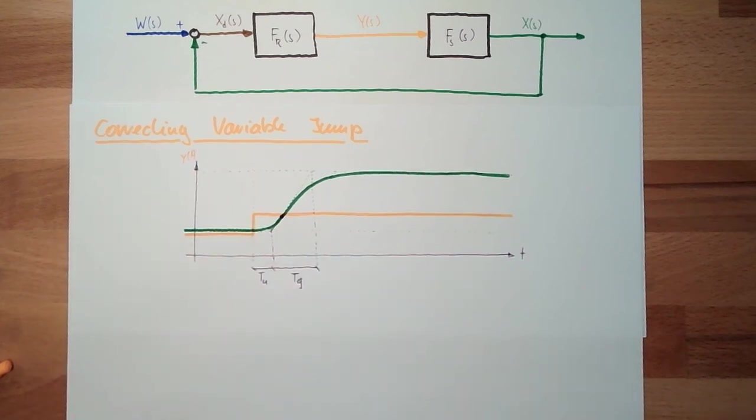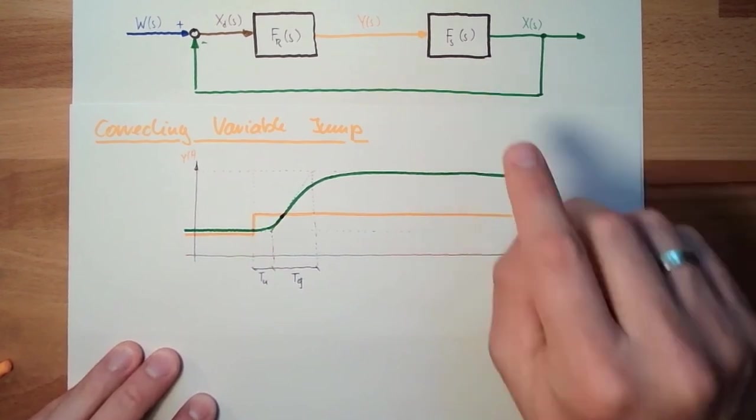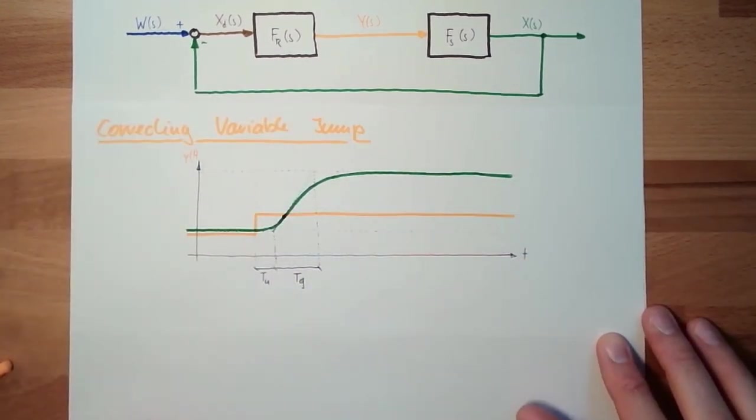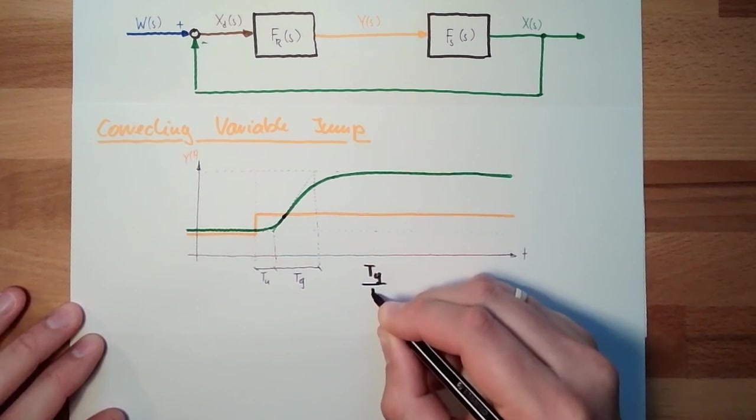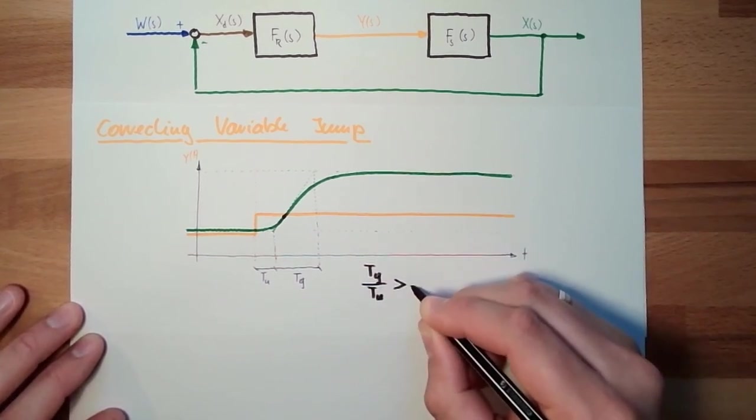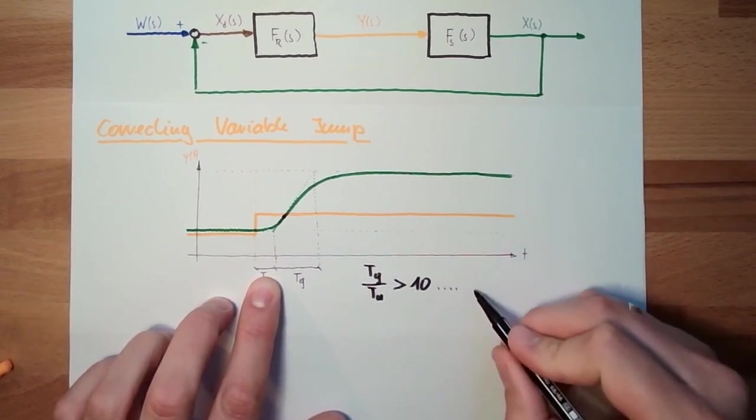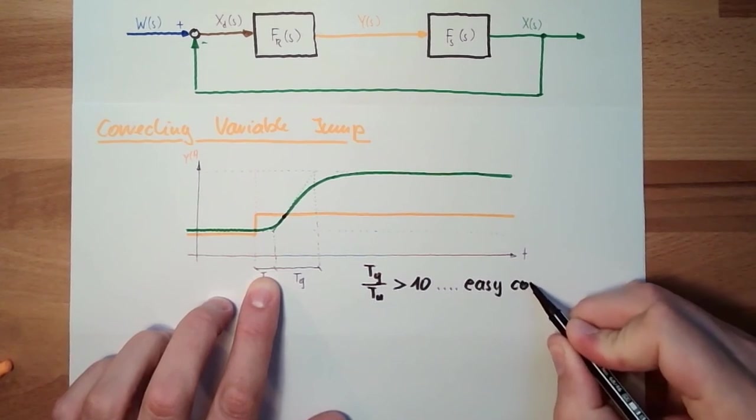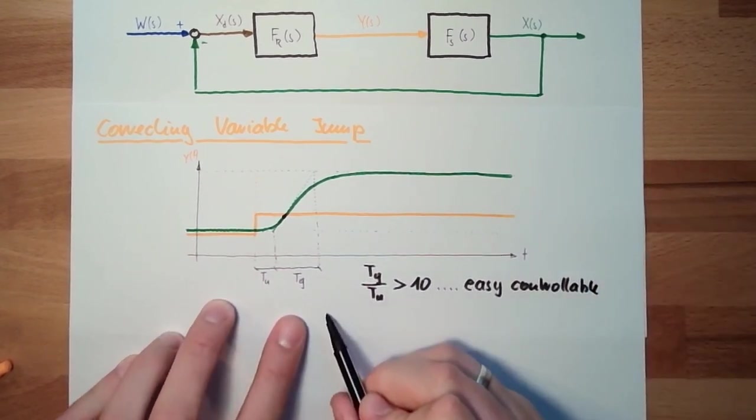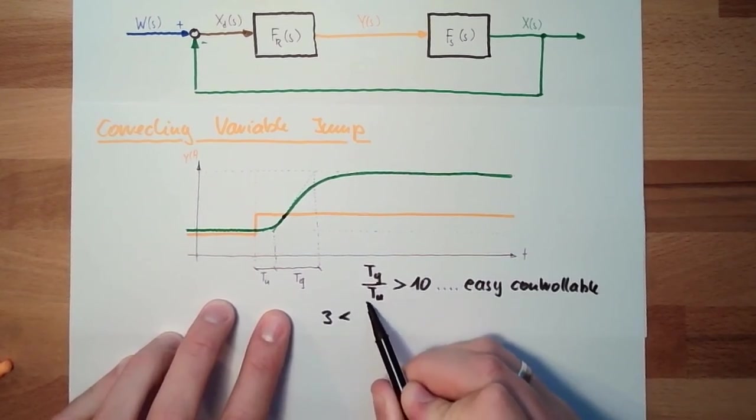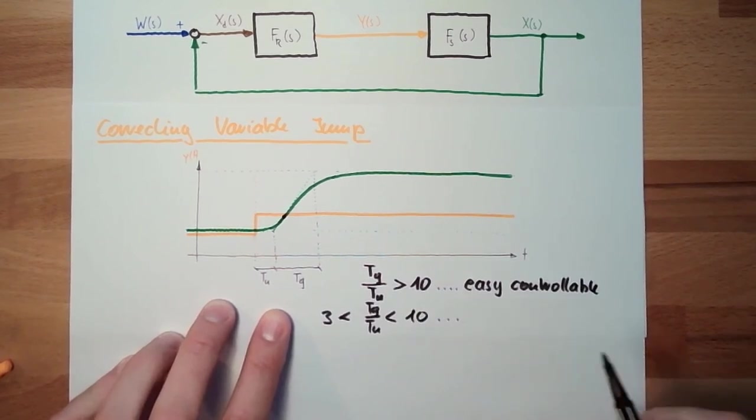What do these two times tell us? I can tell you. These two times show how good or bad this particular system might be controlled by any type of controller. If Tg compared to Tu is bigger than 10, so this is 10 times bigger than this, this means easy controllability. If we're somewhere in the area between 3 and 10, then it's controllable, still controllable.